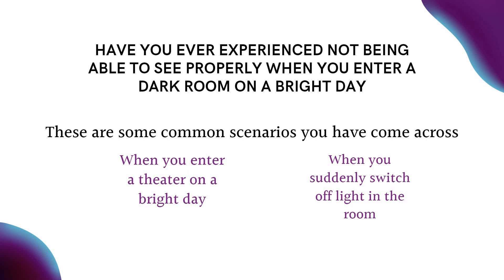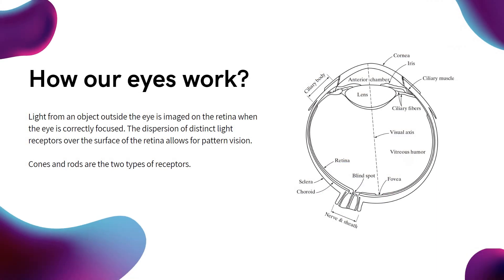I am sure you are curious about the reason. Before we understand the reason behind this, I would like to talk to you about the structure of the eye and how you are able to perceive things around the world. One thing which is always fascinating is how you are able to see and distinguish between different things. The eye consists of various parts as shown in the figure here, but to understand the reason behind the question, we will need to know about two parts.